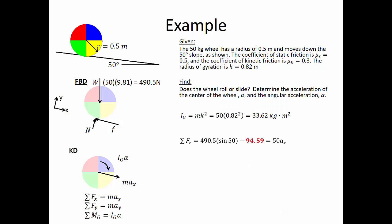We still have the same mass moment of inertia. However, the sum of forces in the x direction becomes 490.5 times sine of 50 minus kinetic friction 94.59, equals 50 kilograms times our acceleration. The sum of moments about the center of gravity equals kinetic friction 94.59 times 0.5, which equals mass moment of inertia 33.62 times angular acceleration alpha. We find that the wheel slides with acceleration equal to 5.62 meters per second squared, and angular acceleration equal to 1.41 radians per second squared. Remember that in this case, we cannot use acceleration equal to angular acceleration times the radius to relate the two unknowns.